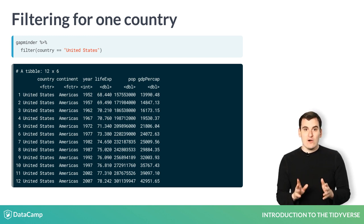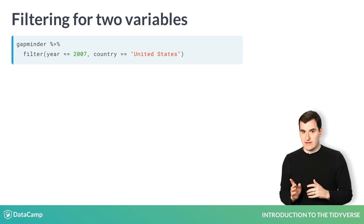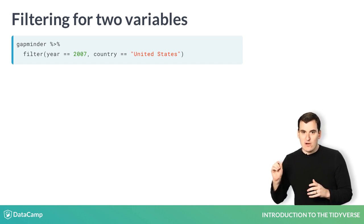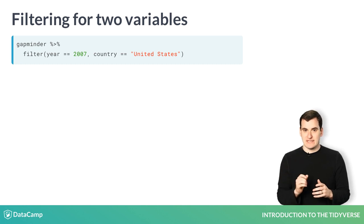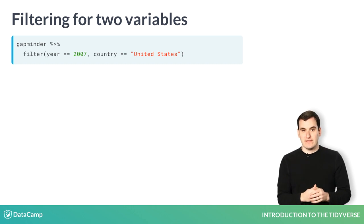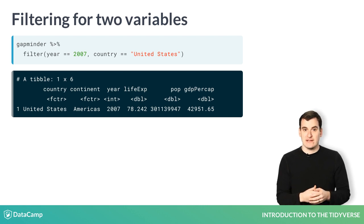Finally, we can specify multiple conditions in the filter. Each of the conditions is separated by a comma. Here, we are saying we want only the one observation for the year 2007, where the country is the United States. Each of these equals equals expressions is called an argument. This kind of double filter is useful for extracting a single observation you're interested in. You'll be able to practice this in the exercises.